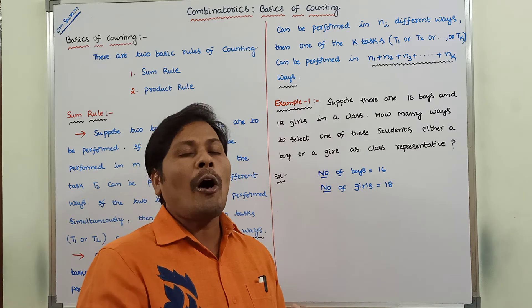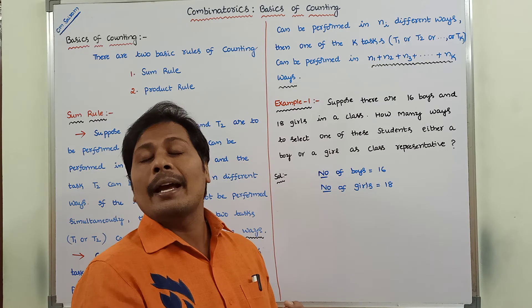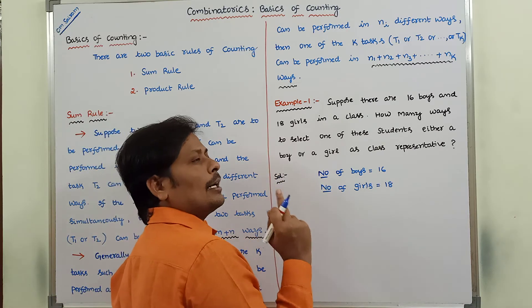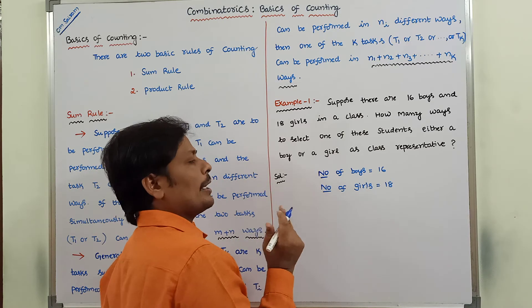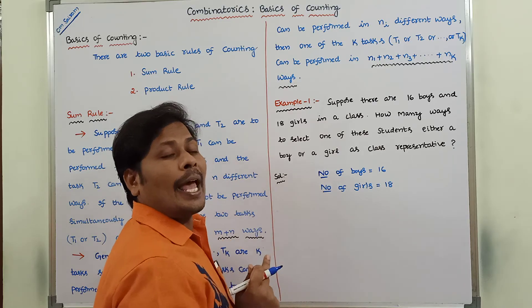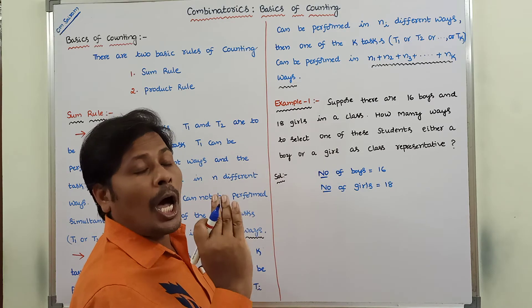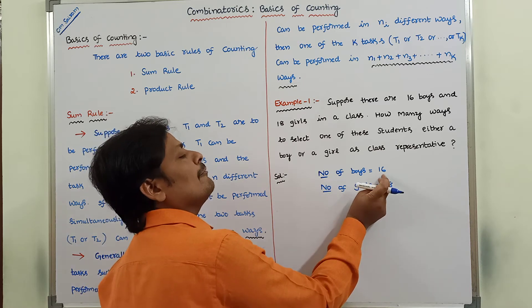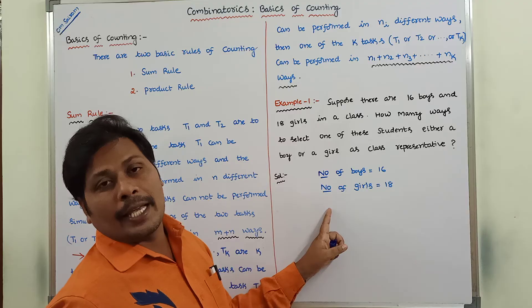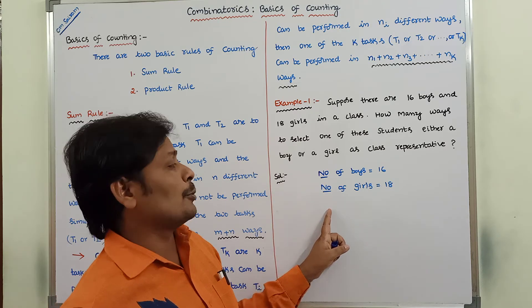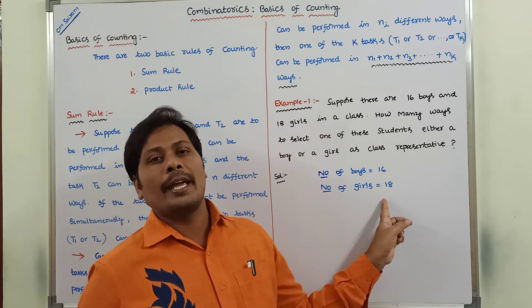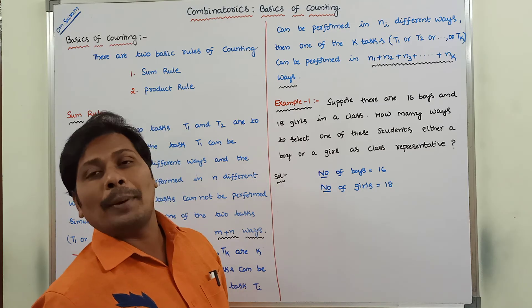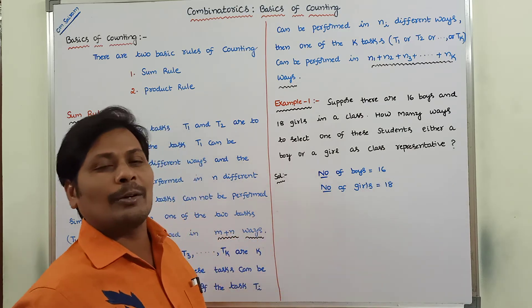When we combine, either a boy or a girl can be selected as a class representative. According to the sum rule, there are two tasks here. Task 1 means a boy can be selected as a class representative — the number of ways of selecting a boy is 16 ways. Task 2 means a girl can be selected as a class representative — the number of ways is 18 ways. Either a boy or a girl can be selected as a class representative in M plus N, that is 16 plus 18, equal to 34 ways.